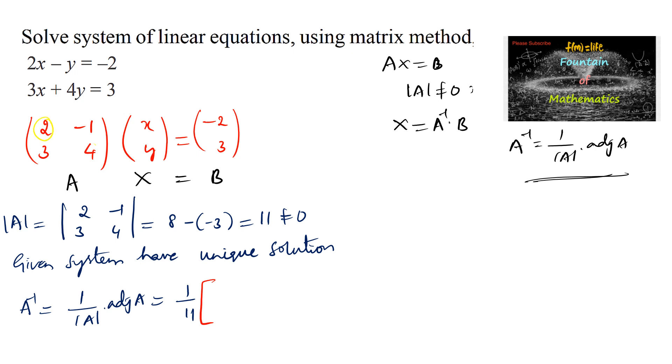We can replace here 2 and 4, so 4 and 2 here, and the remaining elements we can just change the sign of these two non-diagonal elements as 1 and negative 3.